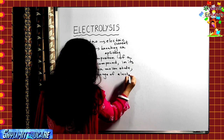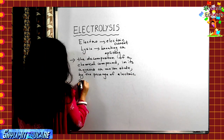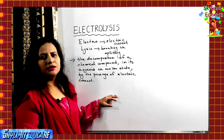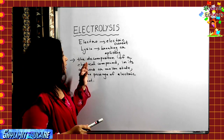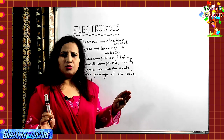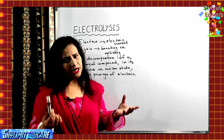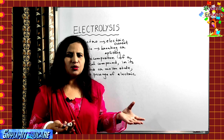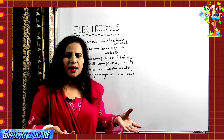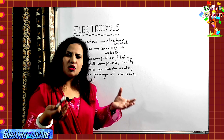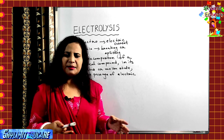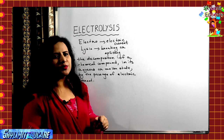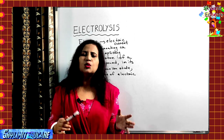For a chemical compound to undergo electrolysis, it should be in its aqueous state or in its molten state. If you take a solid chemical compound, even a strong ionic compound, it won't undergo electrolysis because the ions will not be free to move.